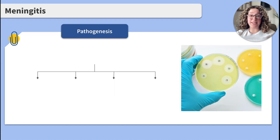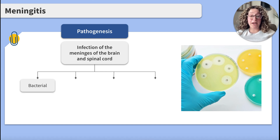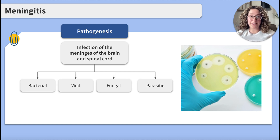Let's start with the basics. What is meningitis? It's an infection of the meninges in the brain and the spinal cord. Meningitis can be caused through four different pathways: bacterial, viral, fungal, and parasitic.